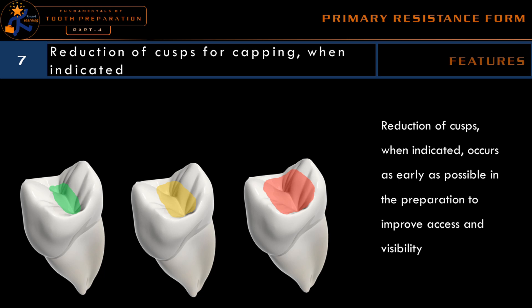Adequate thickness of restorative material is needed — that is one of the features that should be provided. Regarding cusp reduction: whenever we are planning cusp capping, the cusp reduction should be done as early as possible in tooth preparation. This is because reducing the cusp early will provide more accessibility so that the further areas of the tooth can be prepared more conservatively. If the dentist is in doubt whether cusp capping is needed and the tooth is not that much damaged, the operator may go for a bonded restoration. A bonded composite restoration will reinforce the tooth and may prevent fracture of the cusp.